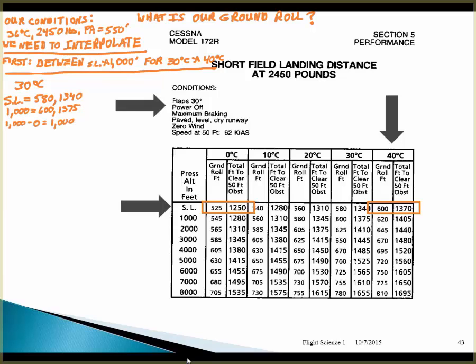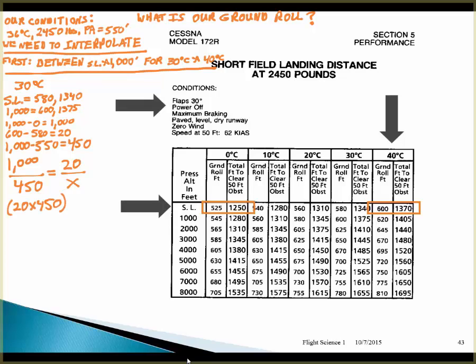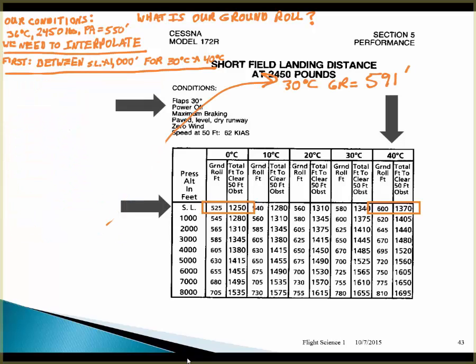We start our math: subtract 0 from 1,000 to find the altitude difference of 1,000 feet, and subtract their corresponding ground rolls to find the difference of 20 feet. Then 1,000 minus 550 gives us 450 feet — the difference between our datum and the pressure altitude we're finding for. Setting up our proportion: 1,000 over 450 equals 20 over X. Solving for X gives 9. So 600 minus 9 equals 591-foot ground roll at 30 degrees centigrade.